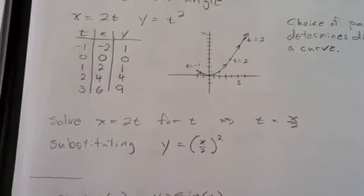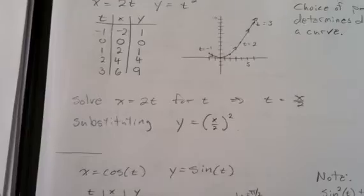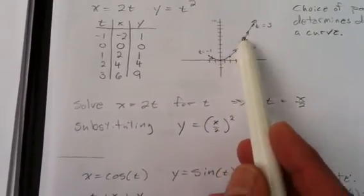So parameterizations can add direction to a two-dimensional shape. It kind of takes two dimensions and makes it three dimensions. You can imagine, perhaps, an object moving along this path here.